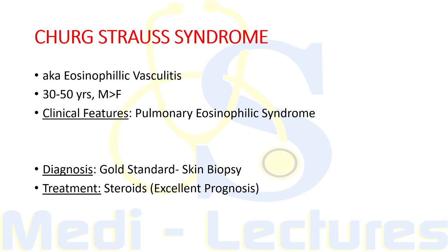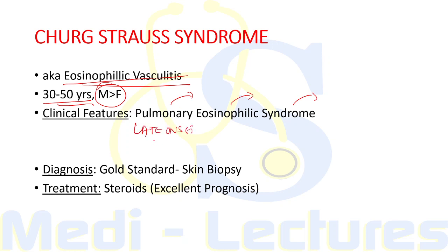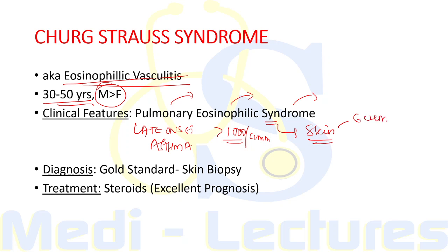The second P-ANCA positive small vessel vasculitis is Churg-Strauss Syndrome, also known as eosinophilic vasculitis, more common in males in the 30 to 50 years age group. Clinical features can be remembered by 'PES' — Pulmonary eosinophilic syndrome. Pulmonary involvement is in the form of late-onset asthma (30 to 50 years age group). There is eosinophilia with counts more than 1000 per cubic mm. Skin involvement is typically eczema or urticarial rash.